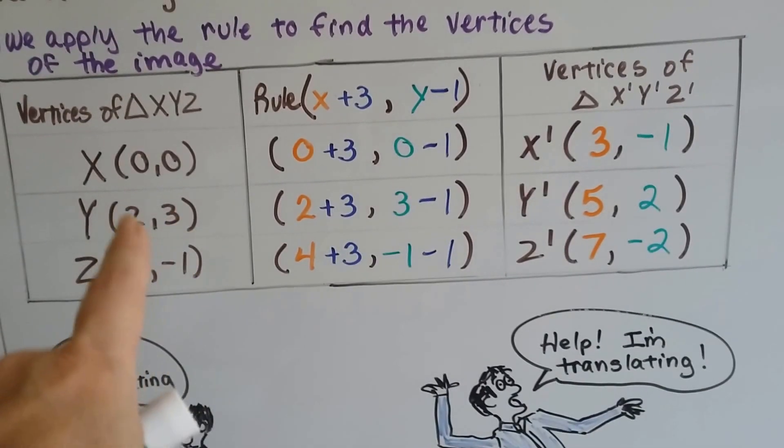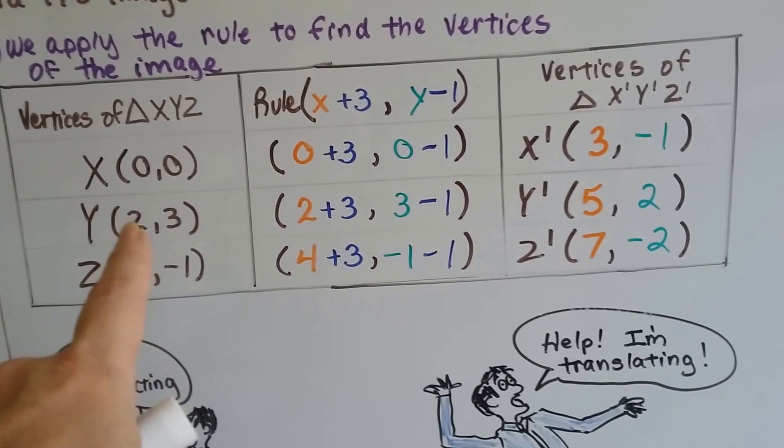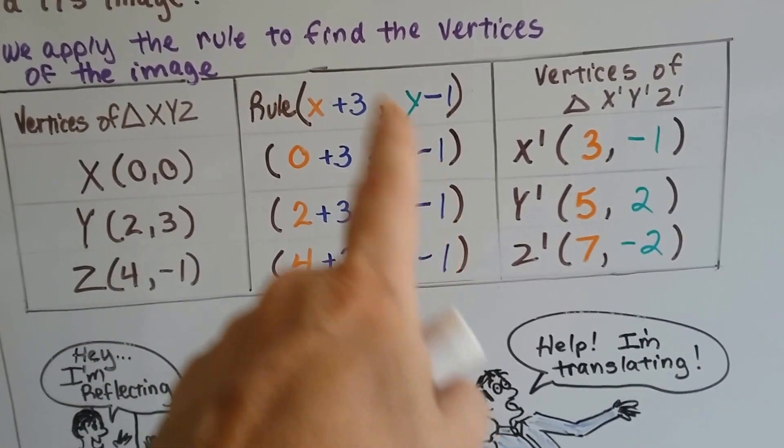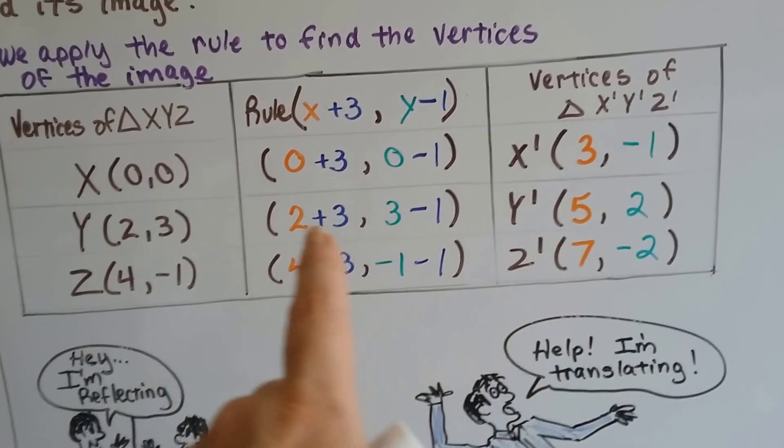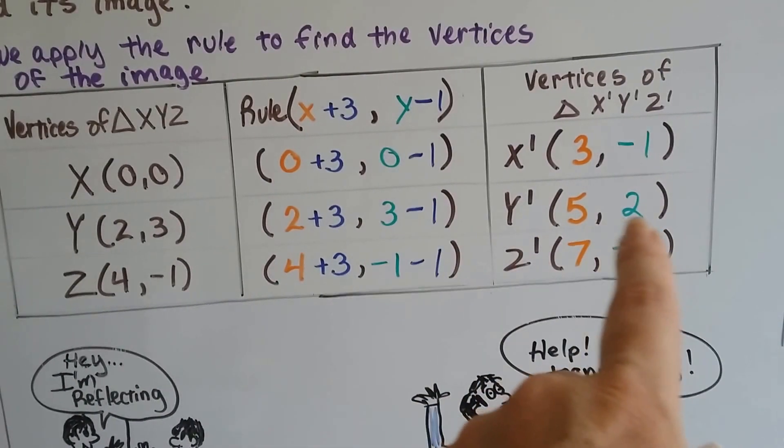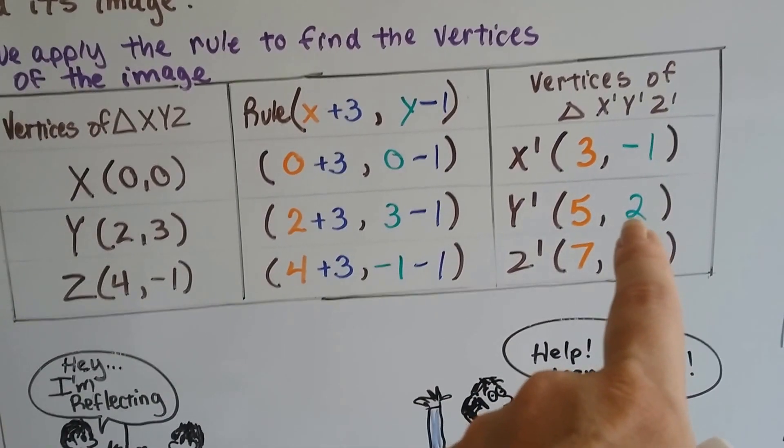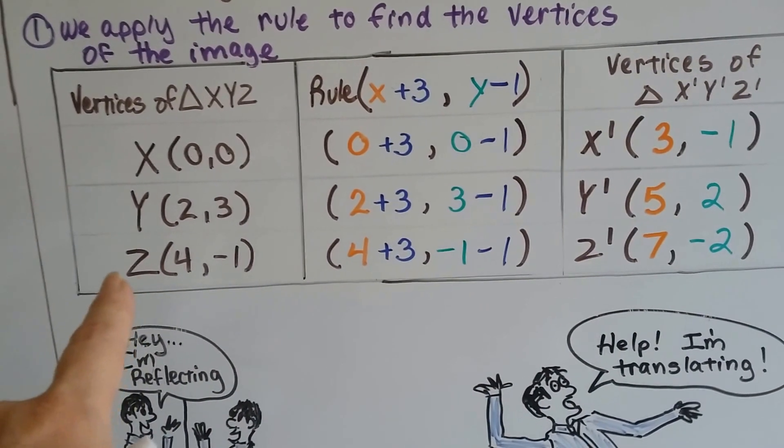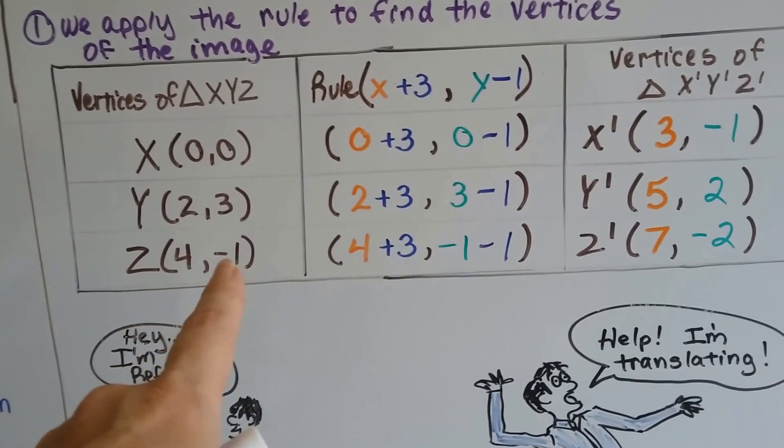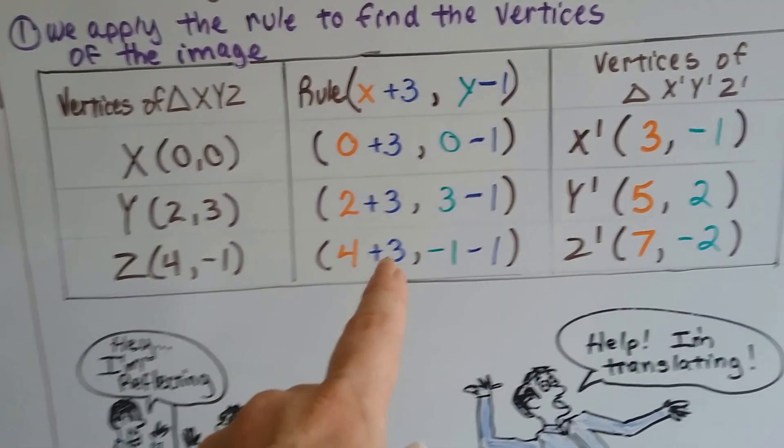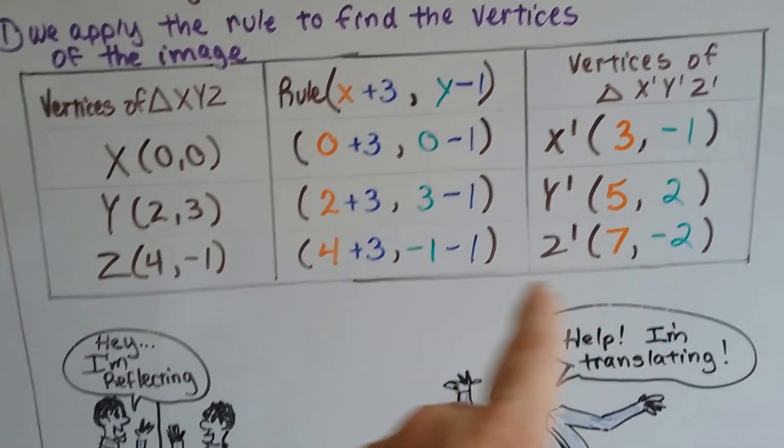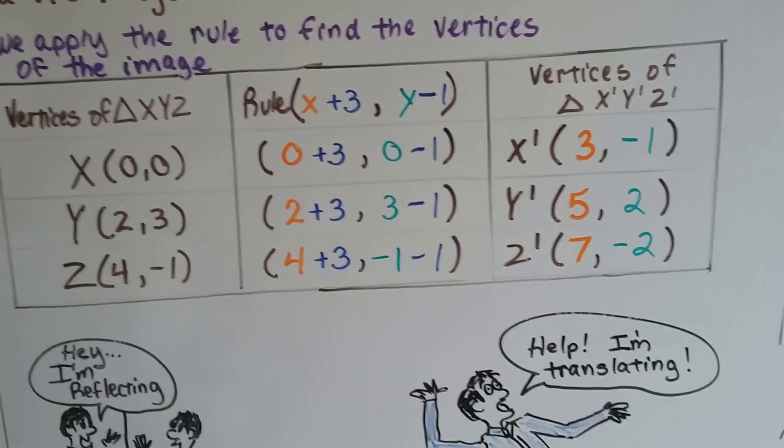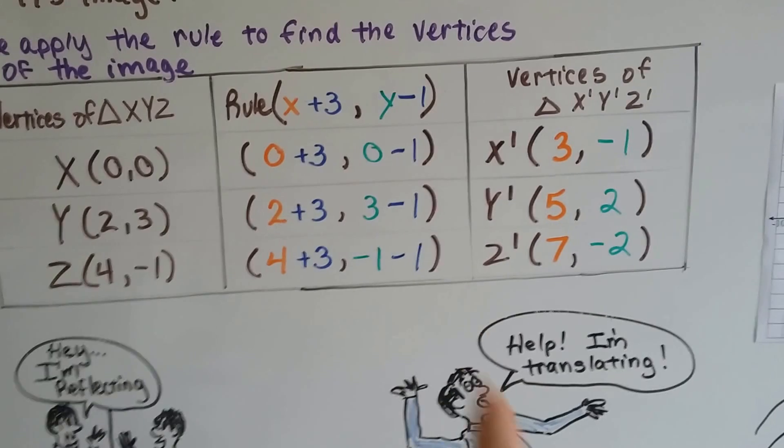Y was at 2 and 3 for X and Y, so X is going to be 2 plus 3, and Y is going to be 3 take away 1. It follows the rule. So 2 plus 3 is 5, and 3 take away 1 is 2. That's its new location for the X prime, Y prime, Z prime triangle. For Z, it was at 4 and negative 1 for X and Y, so 4 plus 3 is X, that's 7, and negative 1 minus 1 is negative 2. So that's the new vertex for Z prime.